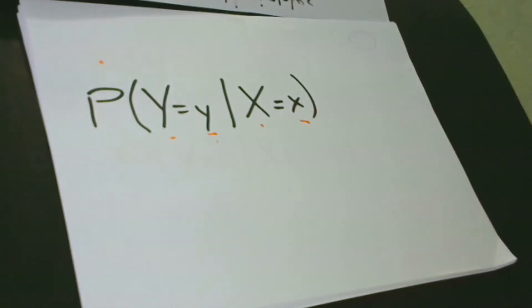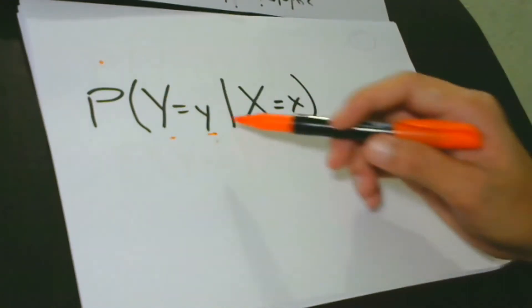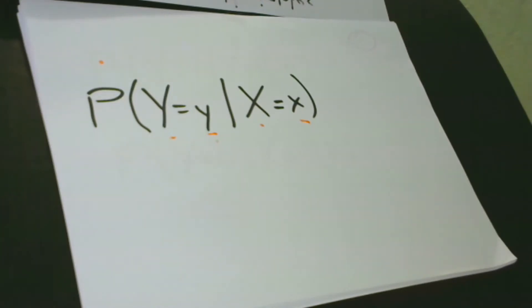If you would like to know the meaning of big Y, big X, small y, and small x, we have already discussed that in lesson 3. If you haven't watched lesson 3, you can go back to it — just pause this video for a while, and then come back to lesson 4 when you are done.